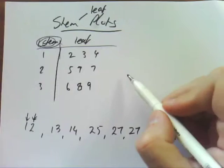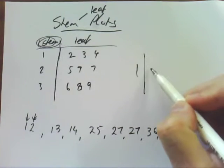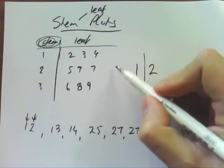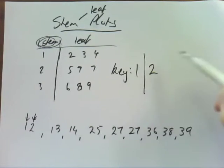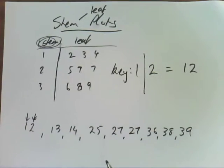When you're drawing them though, you really need to make sure you do a key. So for example, if I was doing this in an example, I would need to write 'key: 1|2 = 12'.